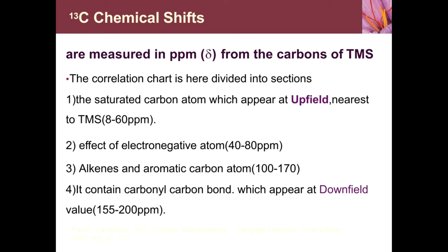The C13 chemical shifts are measured in delta ppm with respect to TMS. The correlation chart is divided into sections. Saturated carbon atoms (sp3) appear at lower delta values, nearest to TMS. The effect of a halogen atom slightly increases the delta values, with chemical shift values lying in the range of 40 to 80 ppm. Alkene or aromatic carbon atoms are quite deshielded, causing delta values in the range of 100 to 170 ppm.